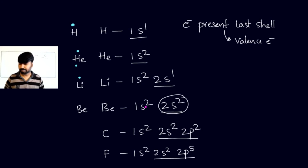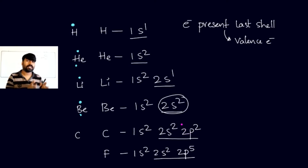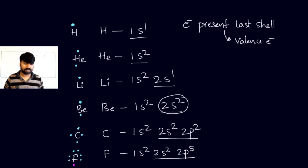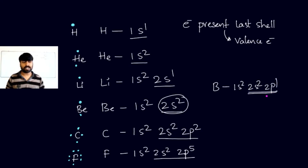For carbon, which has 2s² 2p² in its outermost shell — four electrons total — we write four dots around the carbon symbol. For fluorine, the outermost shell has 2s² 2p⁵, giving seven electrons, so we write seven dots. For boron, with configuration 1s² 2s² 2p¹, there are three electrons in the outermost shell, so three dots are written around the boron symbol.